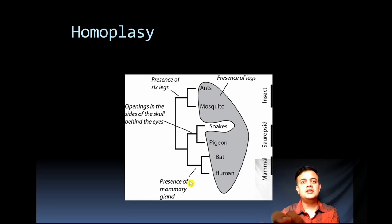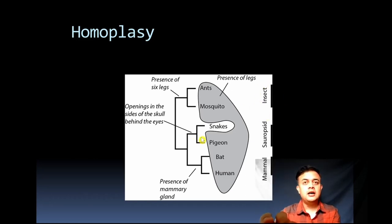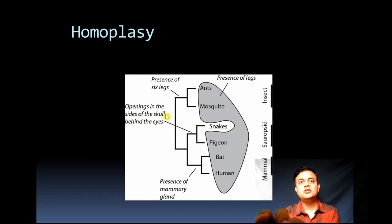If you look at homoplasy, on this tree the left side is a true tree. The presence of six legs is why insects are classified together — this group called Insecta on the right is a monophyletic group, defined based on homologous characters or divergent evolution. Another monophyletic group is snakes and pigeons, called Sauropsida. The character shared by snakes and pigeons is openings in the sides of the skull behind the eyes — all snakes and birds share this common character, making it an evolutionary innovation specific to this clade. Such evolutionary innovations are known as synapomorphic character states.